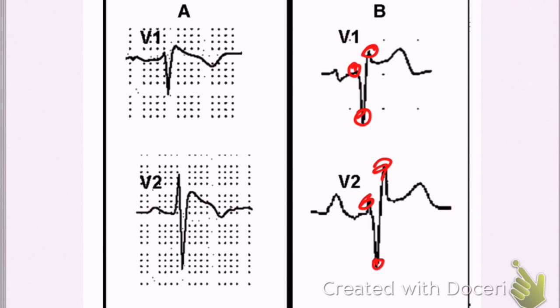So it's a right bundle branch block pattern in both of these. RSR prime in V1, V2. So it's a right bundle branch block pattern.